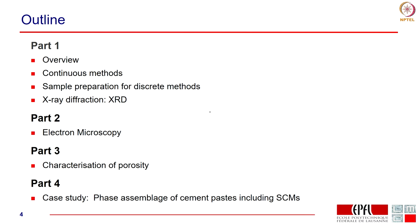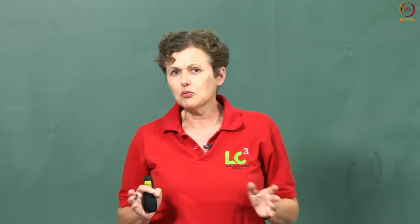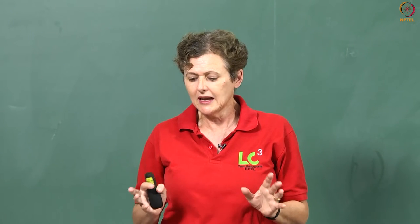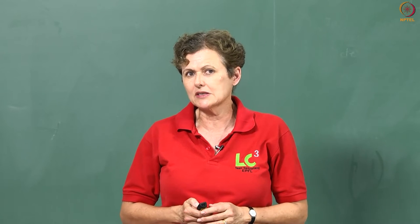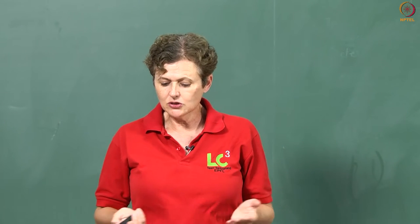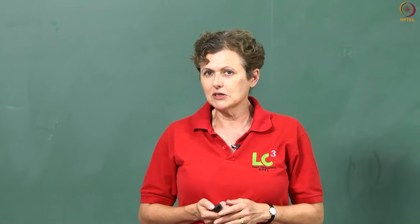Microstructural characterization will have four parts. In this first part we will make an overview of what we are trying to do, talk about continuous methods, sample preparation, and x-ray diffraction. In the second part I will talk about electron microscopy. In the third part, porosity. The fourth part, which is very short, will be a case study to show how we can bring all these techniques together to look at phase assemblages in cement paste.